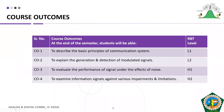These are our course outcomes. Our first course outcome is to describe the basic principles of communication systems. The second is that students will be able to explain the generation and detection of modulated signals. The third course outcome is that students will be able to evaluate the performance of a signal under the effects of noise.